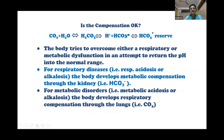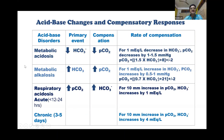For respiratory disease — that is respiratory acidosis or alkalosis — the body develops metabolic compensation. In metabolic acidosis, the primary event is decreased bicarbonate and compensation is decreased CO2. The rate of compensation: for every 1 mEq/L decrease in bicarbonate, CO2 decreases by 1 to 1.5 mmHg. Or use the equation: PCO2 = 1.5 × bicarbonate + 8 ± 2.